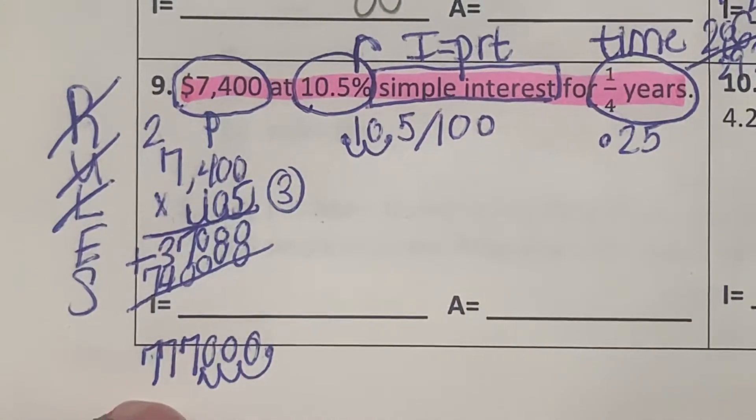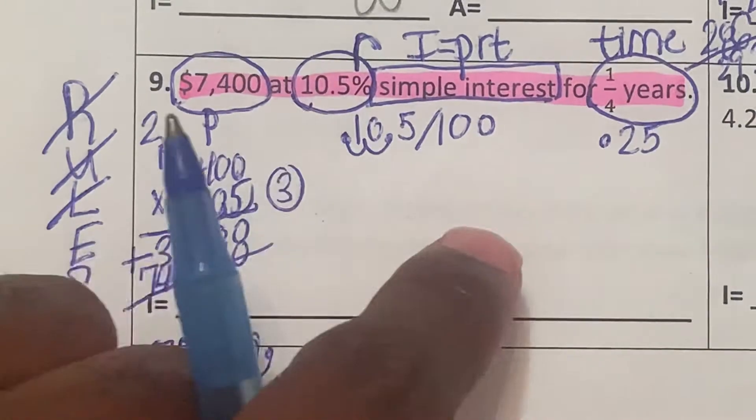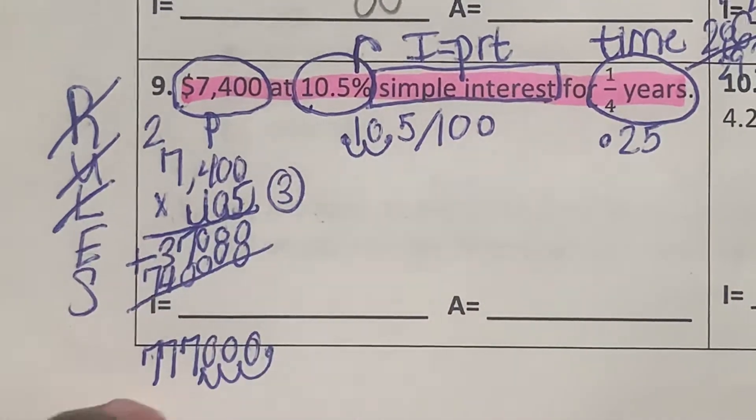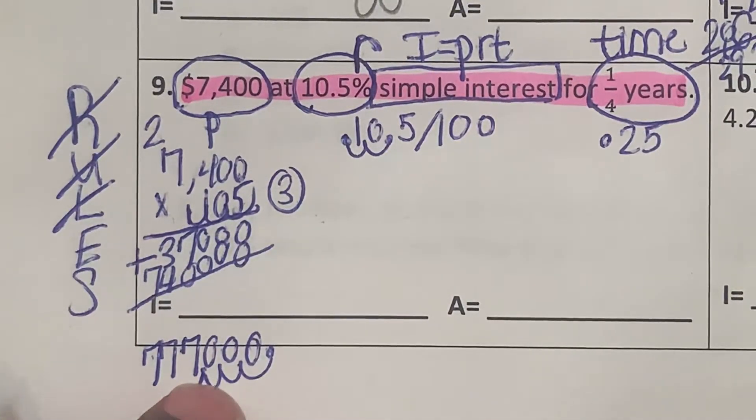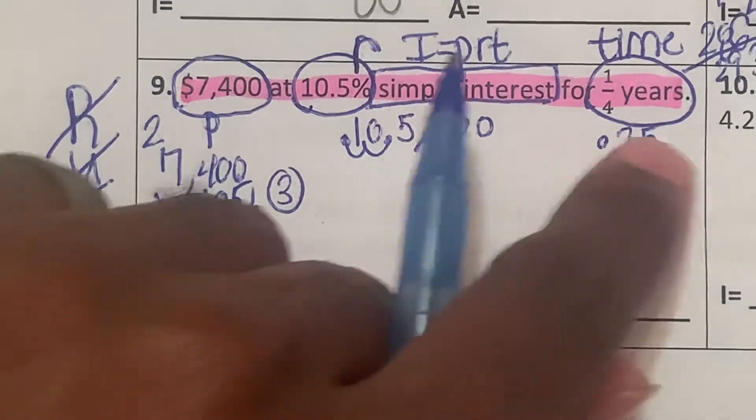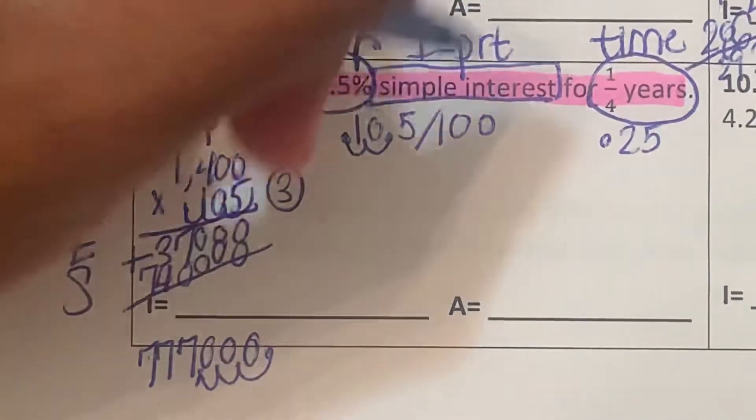$777. But it says it's in the account for 0.25, so we've got to multiply 777 times 0.25, which is the amount time it's in there for. So 777 multiplied by 0.25.